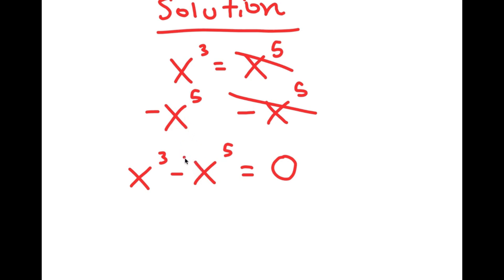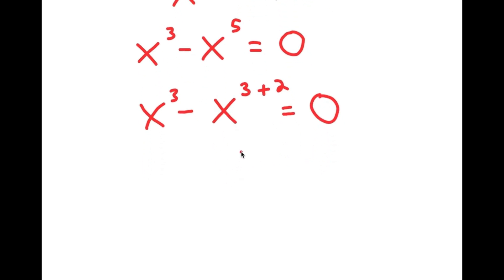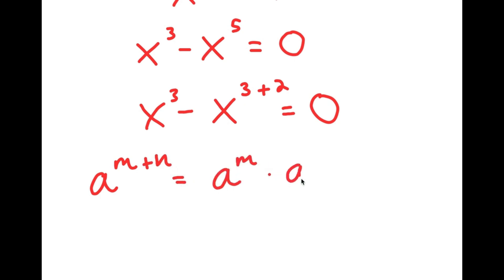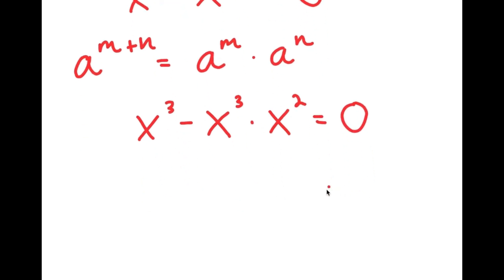From here, x to the power of 5 is the same thing as x to the power of 3 plus 2. An important property of exponents is that a to the power of m plus n equals a to the power of m times a to the power of n. So, x to the power of 3 plus 2 equals x to the power of 3 times x to the power of 2. Now I'm going to factor out x to the power of 3, and I get x to the power of 3 times 1 minus x squared.